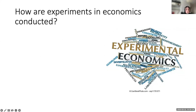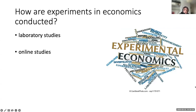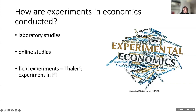Experiments in economics are conducted in many different ways. In the early days, most were conducted in a laboratory — not a physics or chemistry lab, but an office filled with computers where people would read instructions and make decisions. In recent years, online studies have gained popularity, allowing subjects to participate from home. A separate type is the field experiment, conducted 'in the wild.' The Financial Times competition is an example — participants didn't know they were taking part in an actual economics experiment, yet the data was valuable for research.